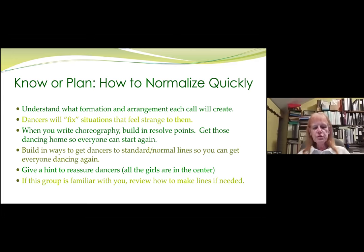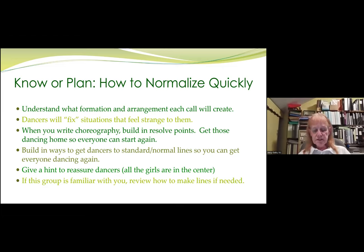Give a hint to reassure the dancers. If they're not in a standard setup, say 'all the girls are in the center, everybody go forward and back' — that way the girls don't get out of the center if they think they're on the wrong side. If the group is familiar with you, review how to make lines if necessary. Caller Lab has published a standard way to make lines — it's a good thing to teach in classes, and then you can remind them how to make lines so you don't have six in one line and two in the other, which happens.